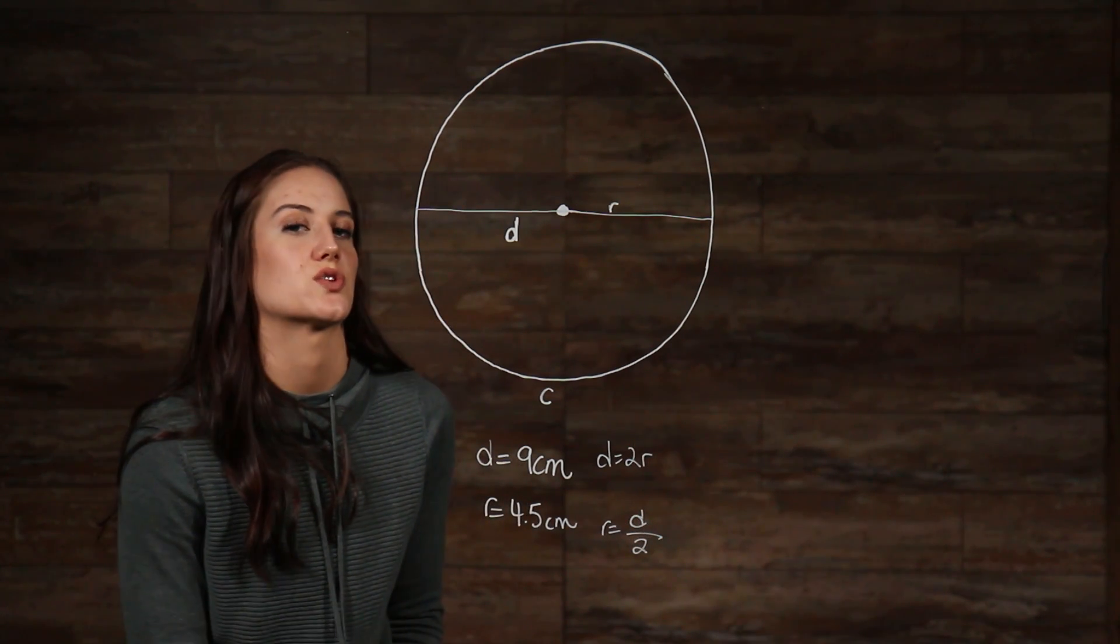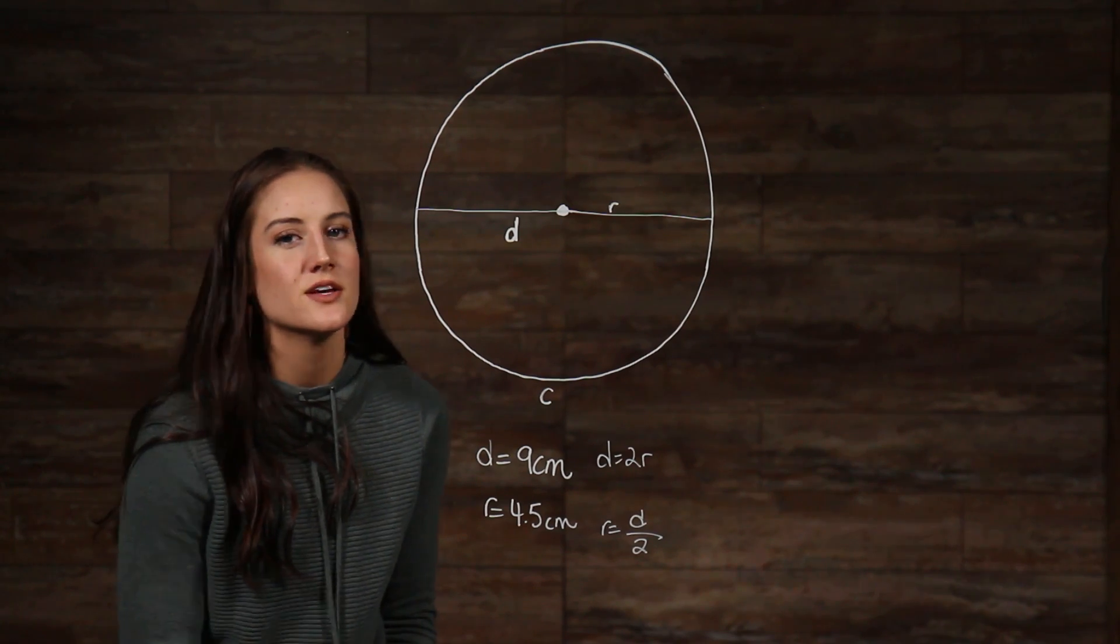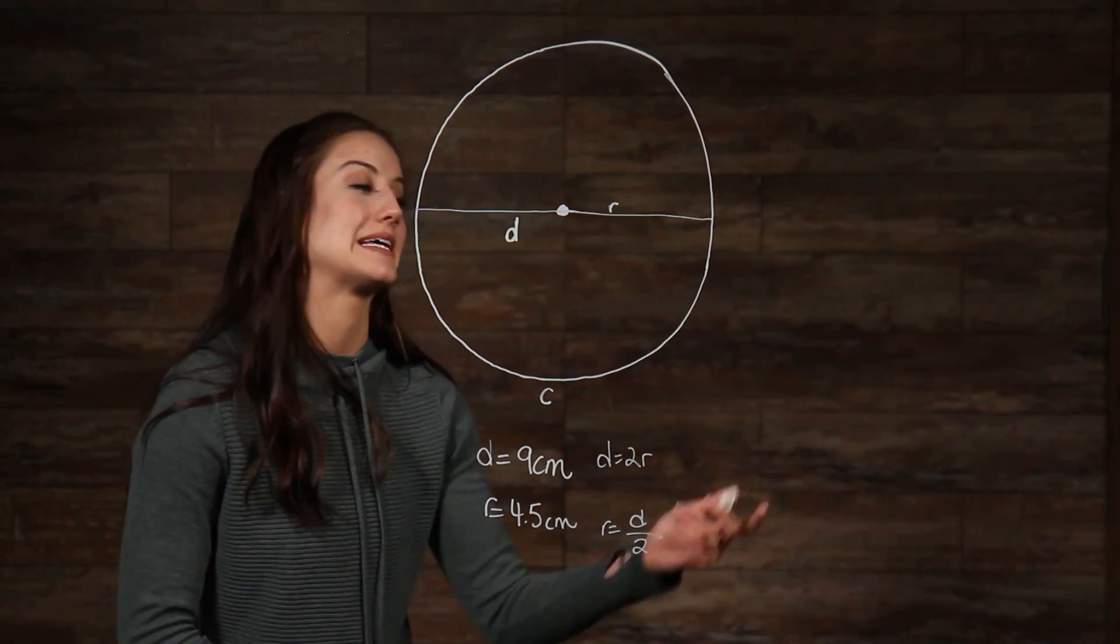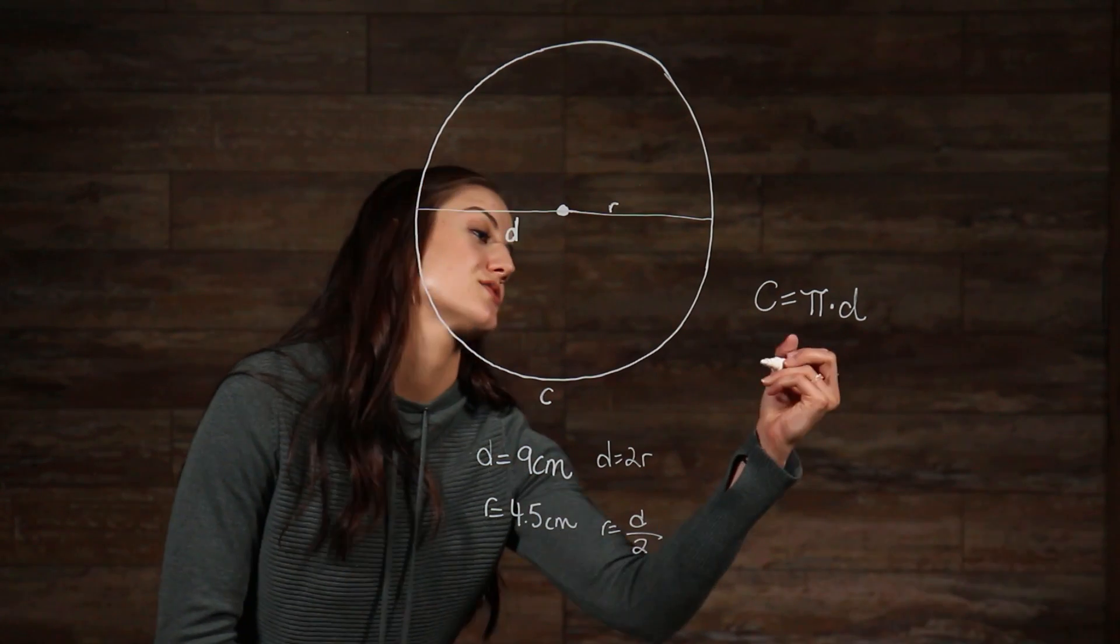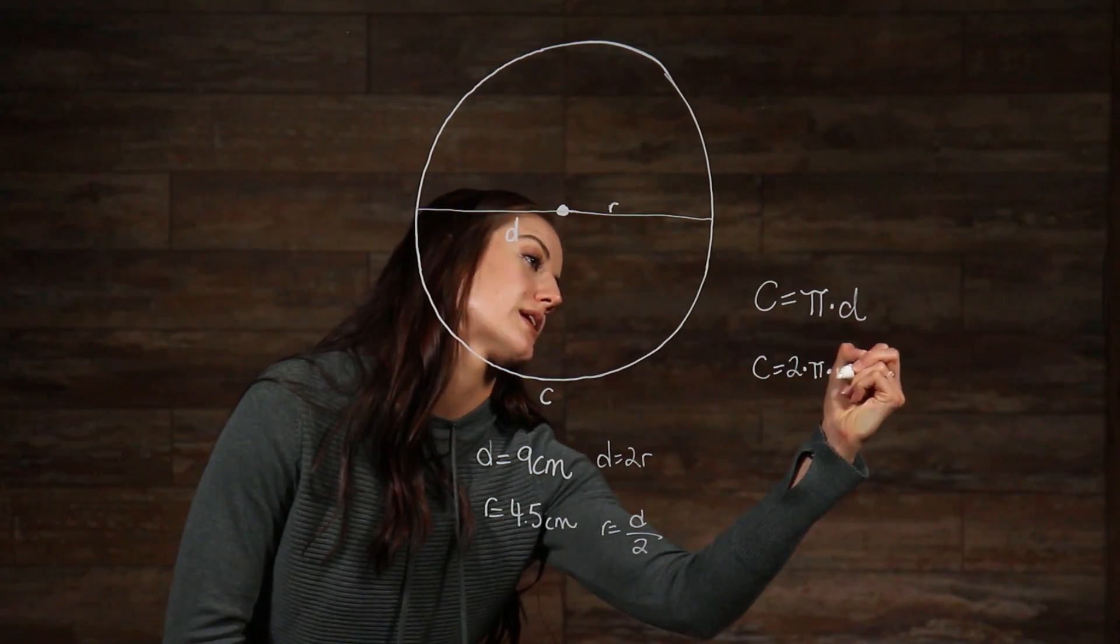Now, to find the circumference of a circle, we need to use a formula. The formula for the circumference of a circle is C = πd, or it can be written as C = 2πr, either one works.